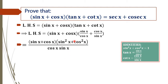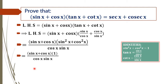By taking the LCM we get this equation. Now we know that sin²x + cos²x = 1. In the next step we substitute this value, so our equation becomes (sin x + cos x) · 1, all divided by cos x · sin x.